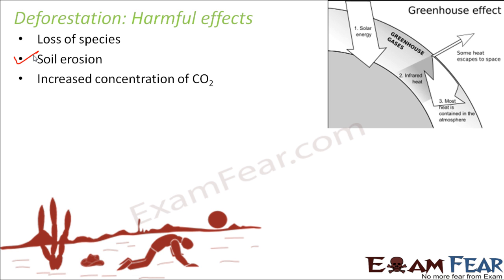Increased concentration of carbon dioxide is another harmful effect. Plants absorb carbon dioxide and utilize it during photosynthesis. An increase in CO2 leads to the greenhouse effect, since carbon dioxide is a major greenhouse gas, which in turn causes global warming — a threat to the survival of living beings on Earth. If we cut down plants, there is nothing to absorb the CO2 present in the atmosphere, so its concentration will keep increasing.